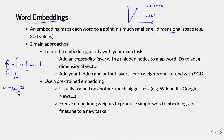First we randomize it — we initialize randomly — then we pass data to the network, look at the output, compute the loss, backpropagate, and update all the weights of this embedding. That's how we learn this embedding.